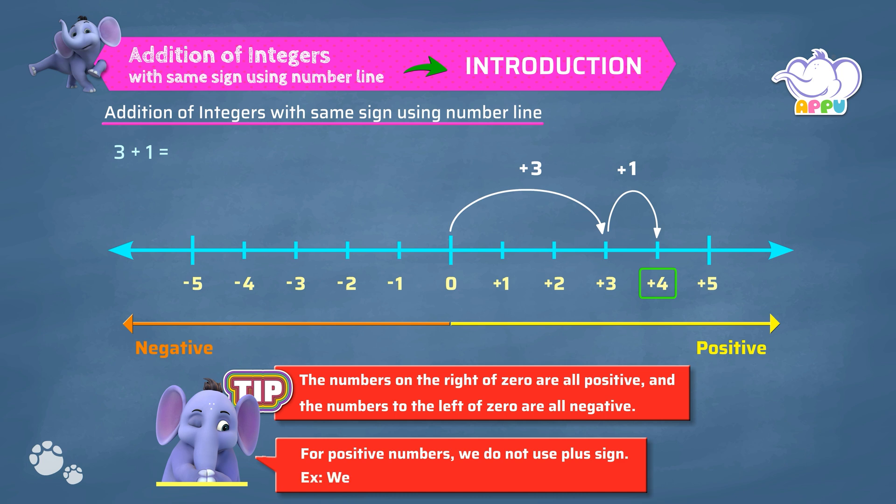For example, we write plus 7 as 7. So the answer is 4. This is how we add integers with same sign.